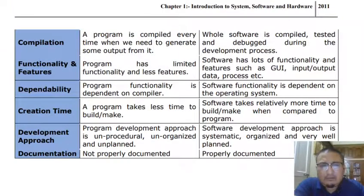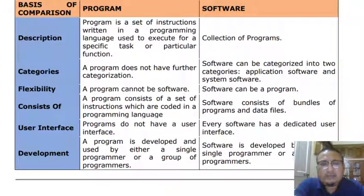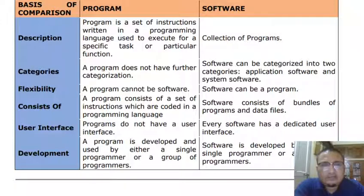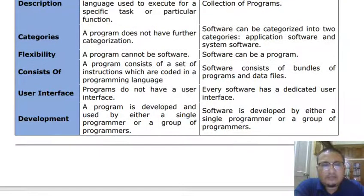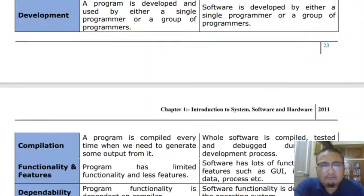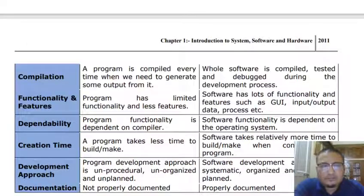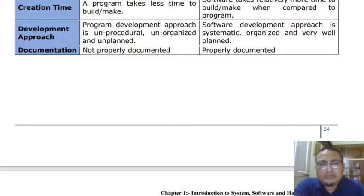So these are the various differences between a program and software. The key bases for comparison to remember are: description, category, flexibility, composition, user interface, development, compilation, features and functionalities, dependability, creation time, development approach, and documentation.